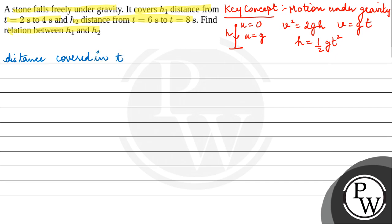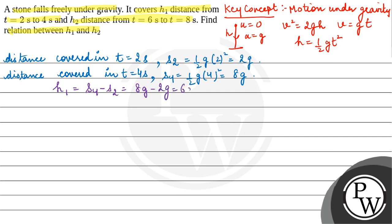Distance covered in t equals 2 seconds, let's say that's s2, will be equal to half g t squared, so this is equal to 2g. Similarly, at t equals 4 seconds, s4 equals 8g. So h1 equals s4 minus s2, that is 8g minus 2g, which is 6g.